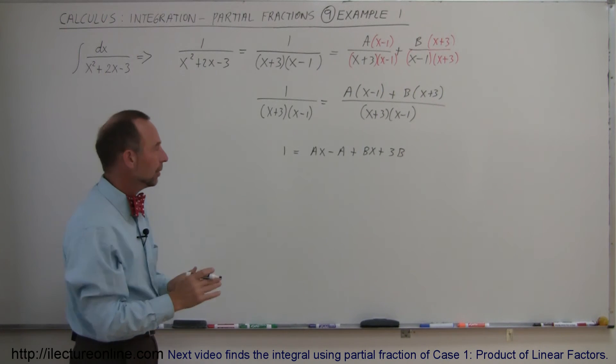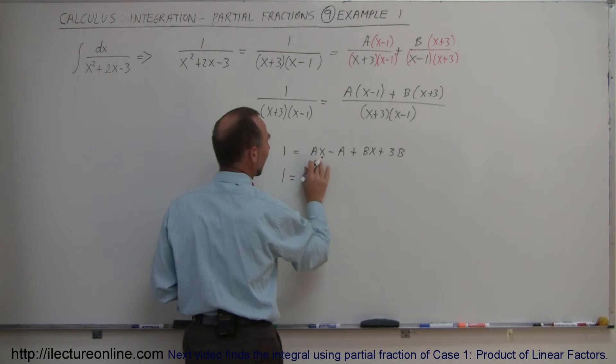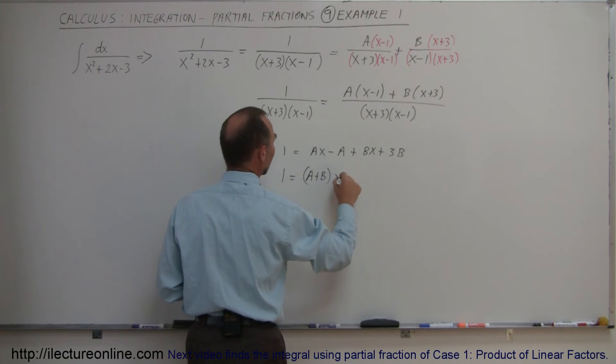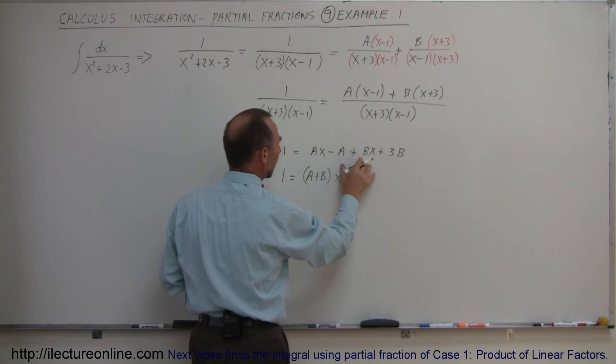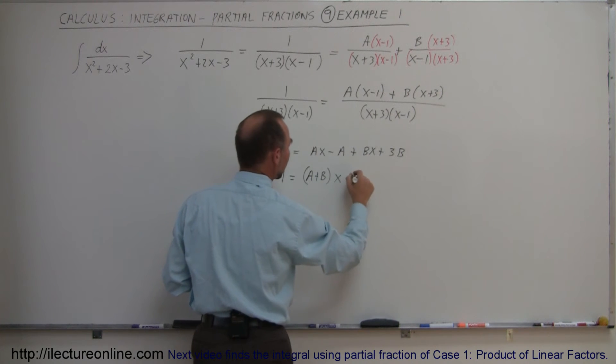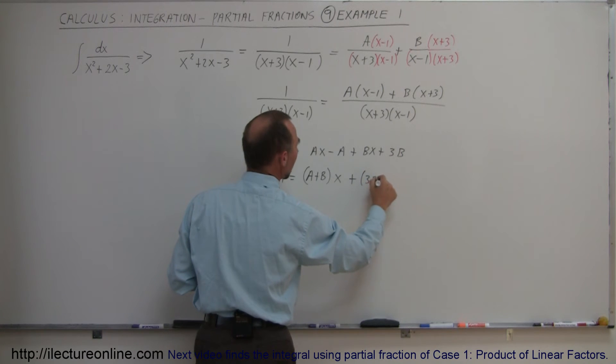And then if I group them together, I can now write that 1 is equal to A plus B times x, A plus B times x for these two components right here, for these two factors, and then I can write 3B minus A.